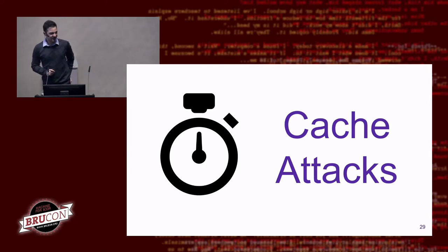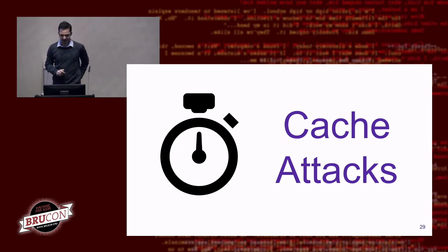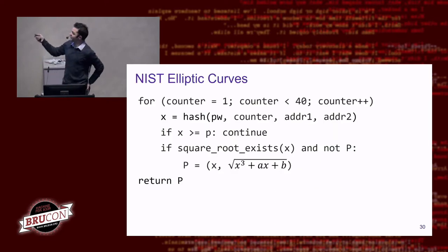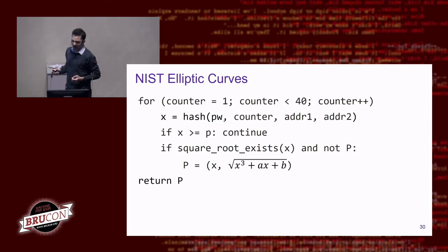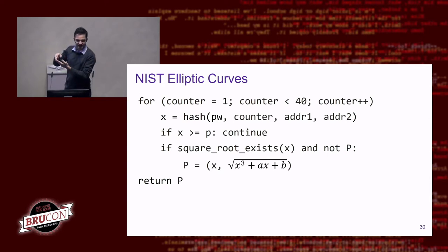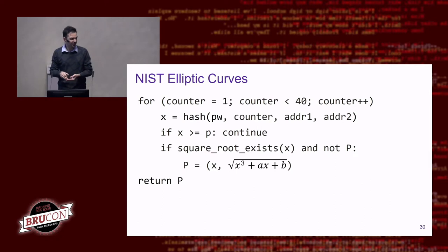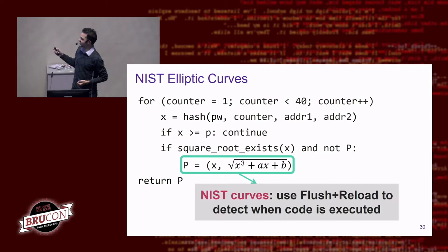Beyond timing leaks, it's also possible to perform cache attacks. Going back to the algorithm: as an attacker, I want to know in which iteration a solution was found. If we know exactly which iteration yielded a solution, we again have information about the password that can be used in an offline brute force attack. We can use flush-and-reload to detect when specific pieces of code are being executed.